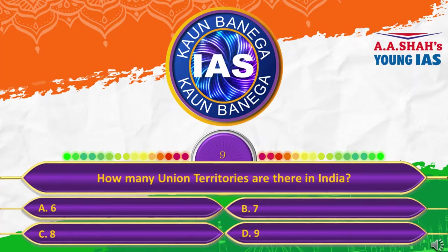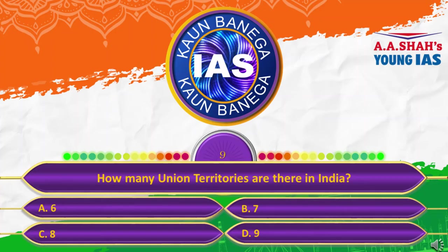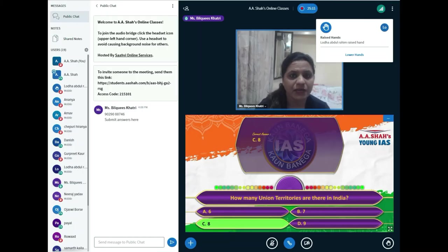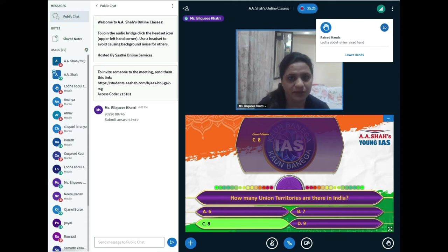Question number nine: How many union territories are there in India? A, 6; B, 7; C, 8; or D, 9? The correct answer is C, 8. Textbooks may show seven, but when Jammu and Kashmir lost its statehood, it was split into two union territories: Jammu & Kashmir and Ladakh. However, Dadra and Nagar Haveli and Daman and Diu were merged into one, making the total eight union territories.